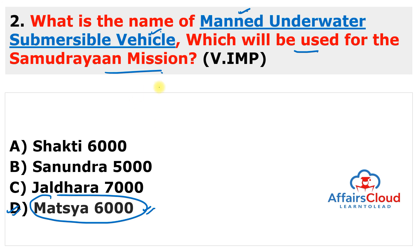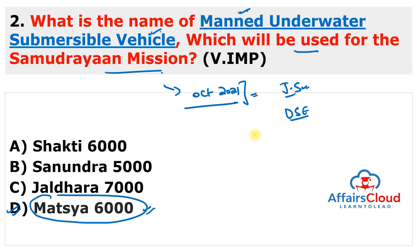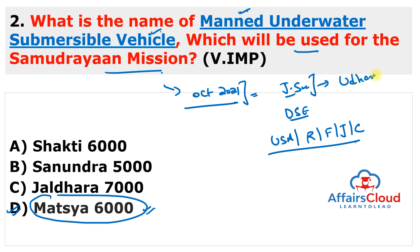Matsya 6000 is an undersea submersible vehicle designed by ISRO and developed by the Ministry of Earth Sciences under the Deep Ocean Mission. What is the Samudrayaan mission? In October 2021, Union Minister of State for Science, Technology and Earth Sciences, Jitendra Singh, launched India's first manned ocean mission — Samudrayaan — which aims to send humans for deep sea exploration. India will join the elite club of countries including the USA, Russia, France, Japan and China. The Union Minister of Earth Sciences is Dr. Jitendra Singh, whose constituency is Udhampur in Jammu and Kashmir.